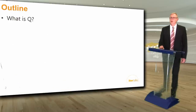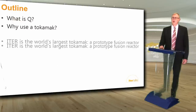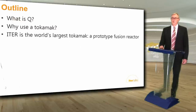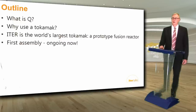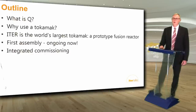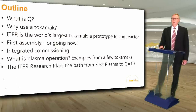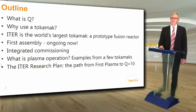Here's an outline of the talk. First I'll describe what is Q, and then briefly say why we use a tokamak. Then I'll describe the essential elements of the world's largest tokamak, ITER, a prototype fusion reactor, with a few photos of the first assembly going on now. I'll describe integrated commissioning to prepare for ITER operation, show examples of plasma operation from existing tokamaks, and finally describe in detail the main steps of the ITER research plan, from first plasma to Q equals 10.